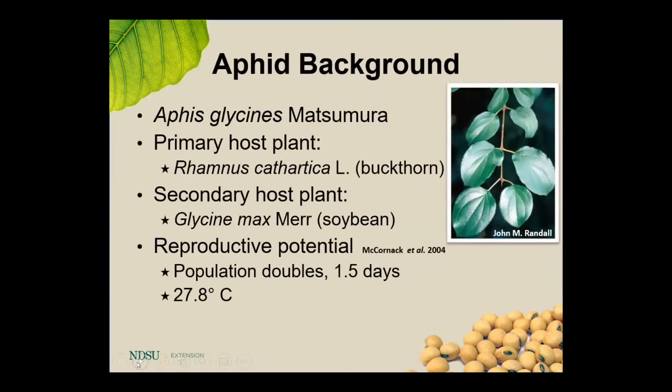Soybean aphid actually survives on two different plant hosts throughout the growing season — a winter host and a summer host. That primary host for wintertime is common buckthorn, which is not too common throughout parts of North Dakota. When soybean aphid does show up, it really needs to find a different method to arrive here, and that's thanks to upper-level wind currents that bring it in from the Midwest — Ohio, Indiana, Illinois, even parts of Minnesota — fueling populations here in North Dakota. In the summertime, of course, it shifts over to soybean for that summer host.